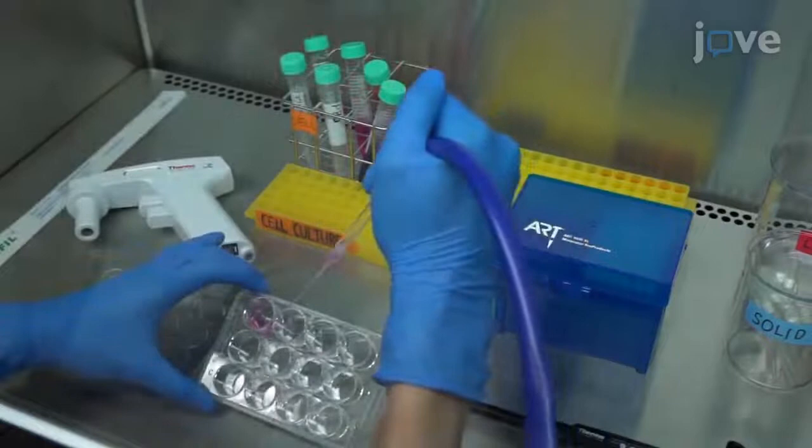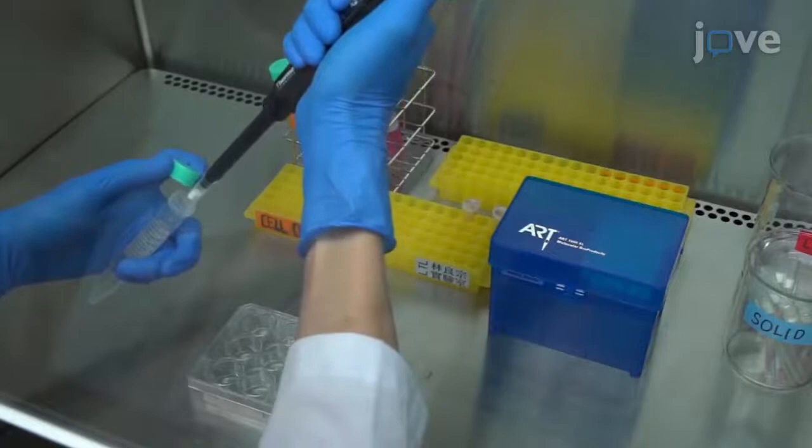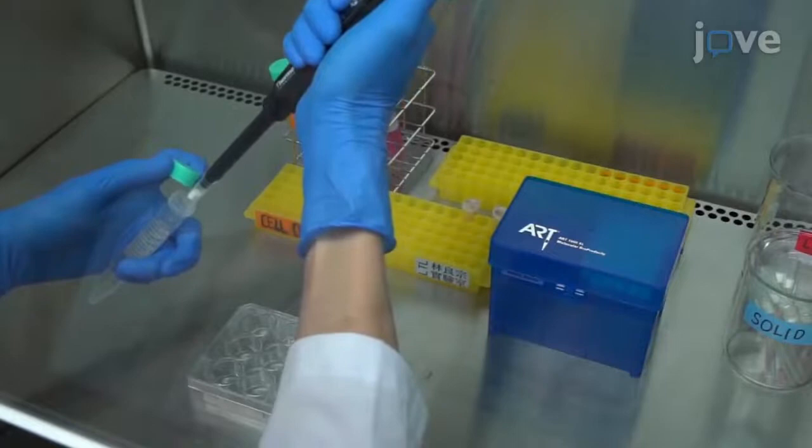After 72 hours in the cell culture incubator, wash each well with 2 mL of PBS and fix the cells with 0.5 mL of 37% formaldehyde per well for 15 minutes.